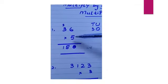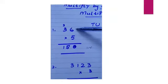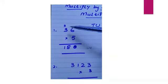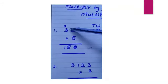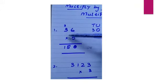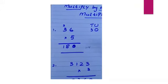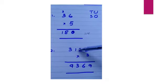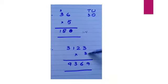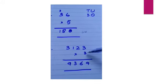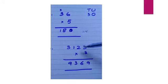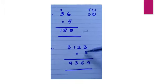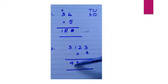36 multiply by 5. 5 times 6 is 30. There are two numbers: 0 is written down and 3 is carried. 5 times 3 is 15, plus 3 is 18. So your answer is 180.